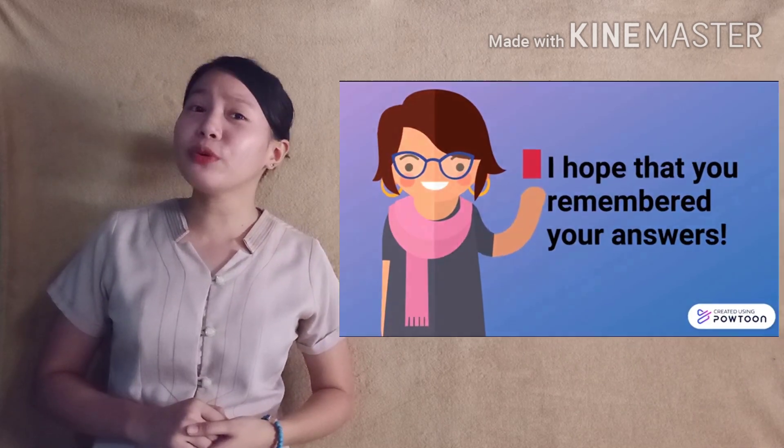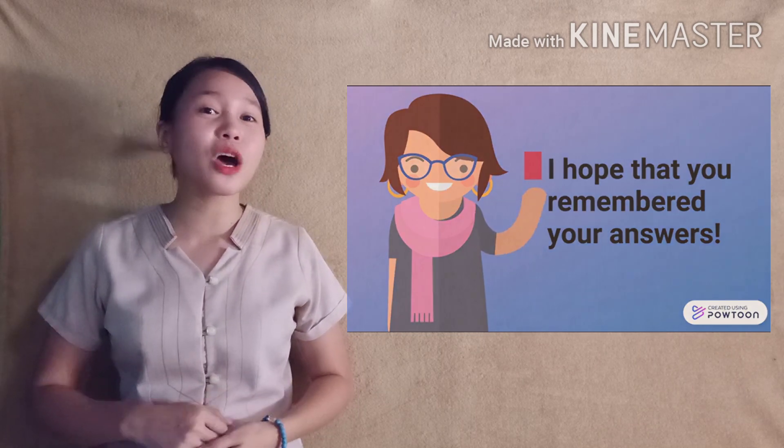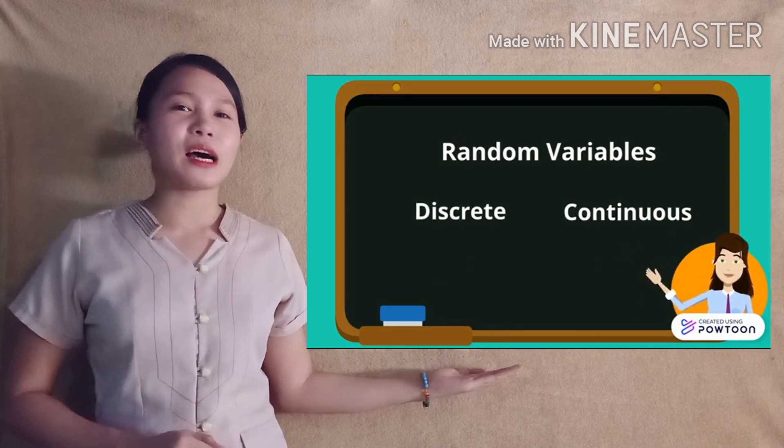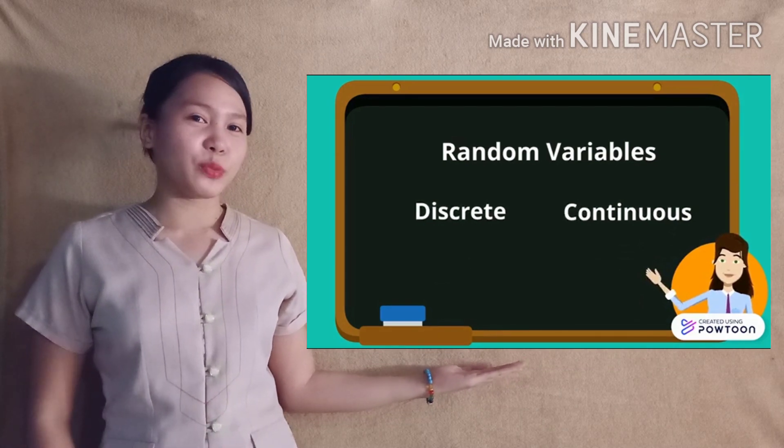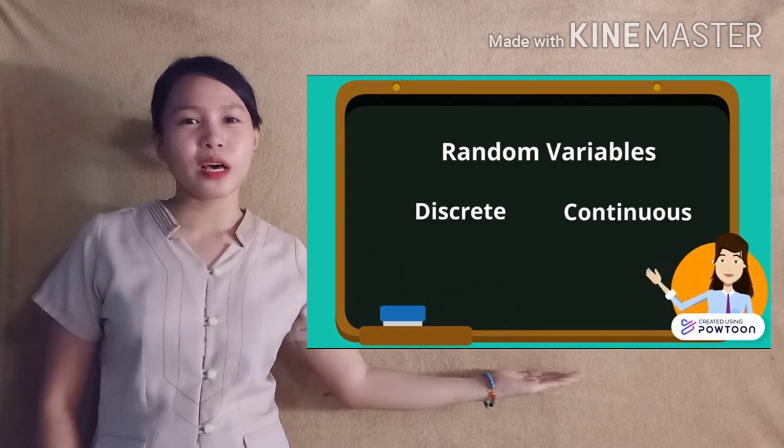I hope you remembered all of your answers because the correct answers will be revealed at the end of this lesson. So please listen carefully. Random variables have two types: discrete and continuous. Let us first begin discussing what discrete random variables is all about.